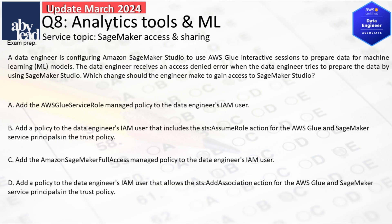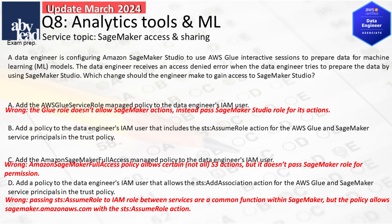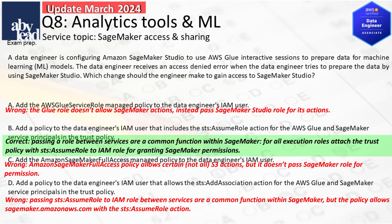Question 8: How do you resolve an access denied error of SageMaker Studio using Glue for machine learning models? To pass the SageMaker Studio role for its actions, you can't use Glue's role or SageMaker Full Access Policy. Also, you can't use an STS role action as in a Policy Allowance. The solution is to pass the SageMaker role to Glue or other services with the STS role in the Attach Trust Policy to IAM.